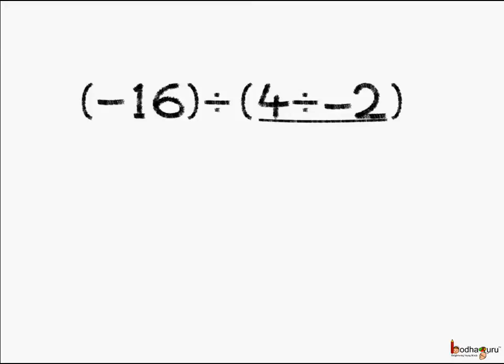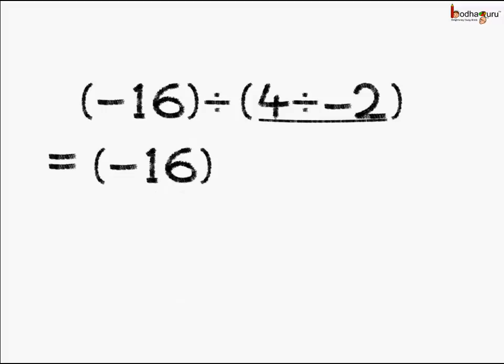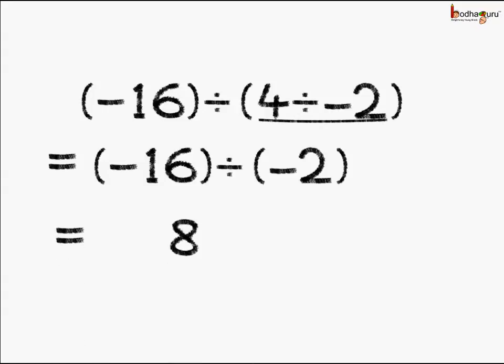Now let's take the other group: minus 16 divided by (4 divided by minus 2) first. We know 4 divided by 2 is 2, and when we divide a positive number by a negative number, the answer is negative. So 4 divided by minus 2 equals minus 2. The problem reduces to minus 16 divided by minus 2. Since 16 divided by 2 is 8, and a negative divided by a negative gives a positive, the answer here is plus 8.